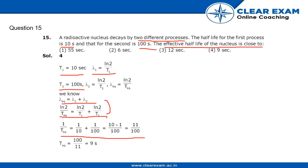10 plus 1 by 100, equals 11 by 100. So from this expression, we get T equivalent equals 100 by 11, which is approximately 9 seconds. Our answer is 9 seconds. Thank you.